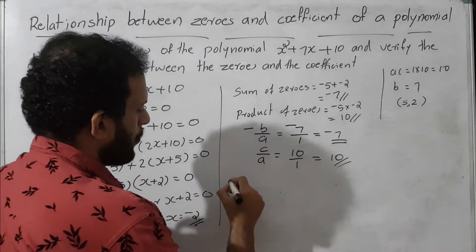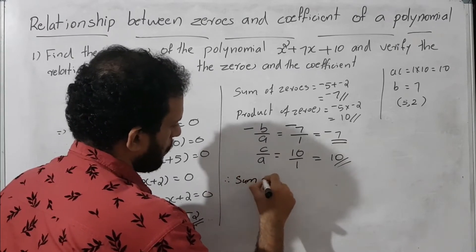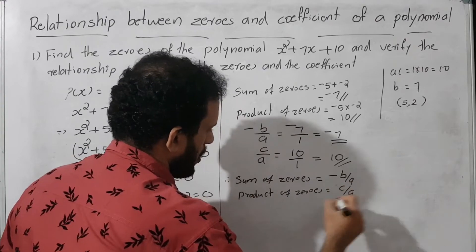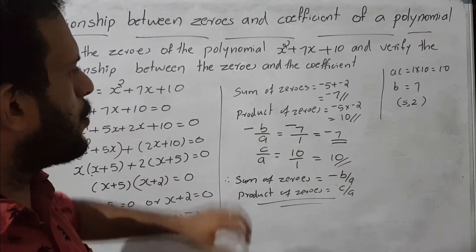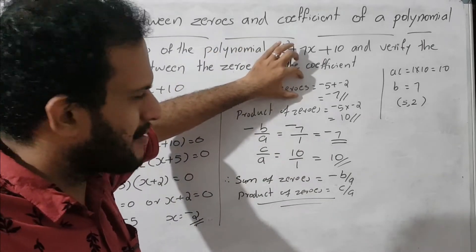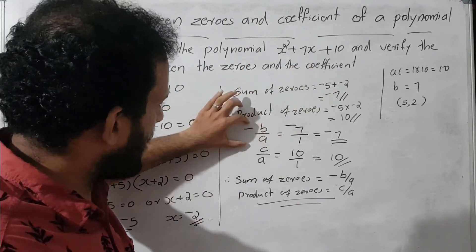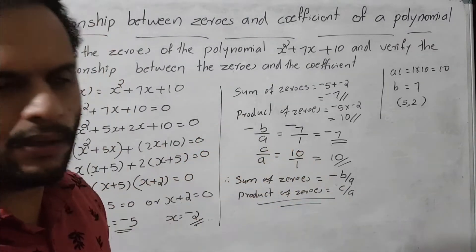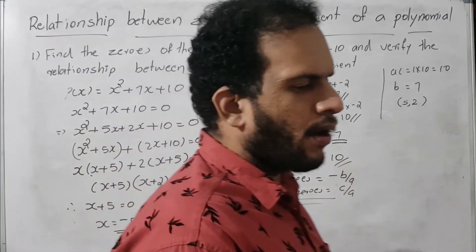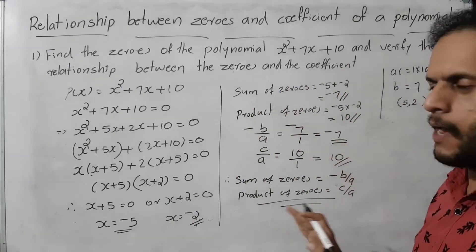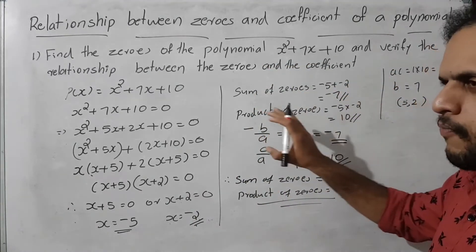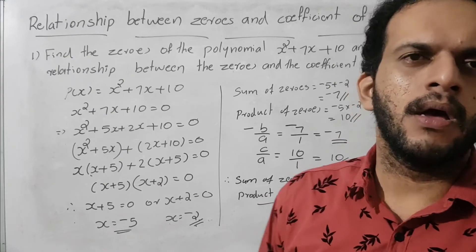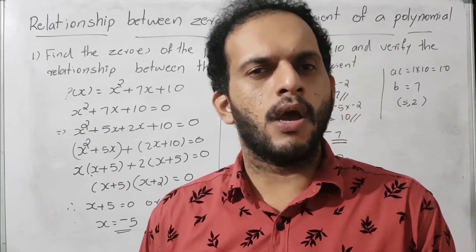Therefore sum of zeros equals minus B by A, and product of zeros equals C by A. The verification method: find sum of zeros separately, find product of zeros separately, find minus B by A value, find C by A value, then show they are equal.